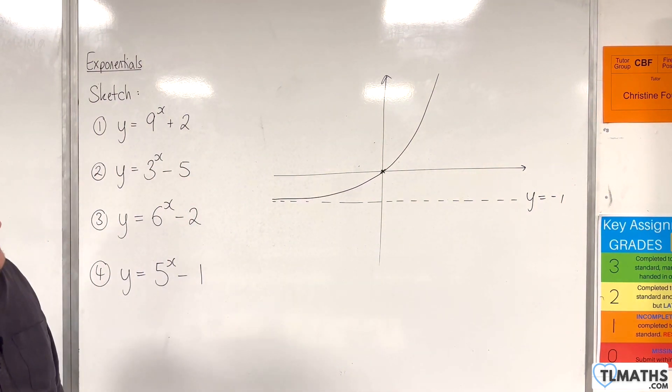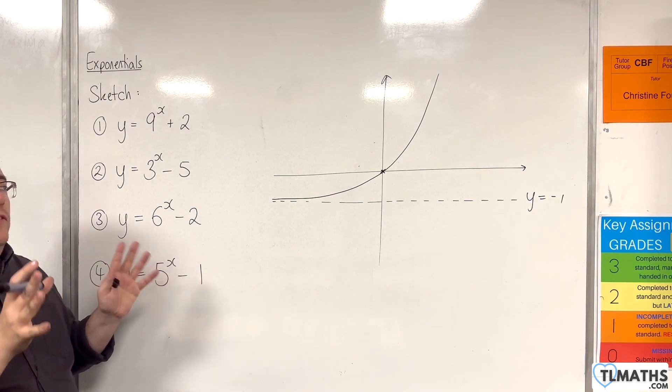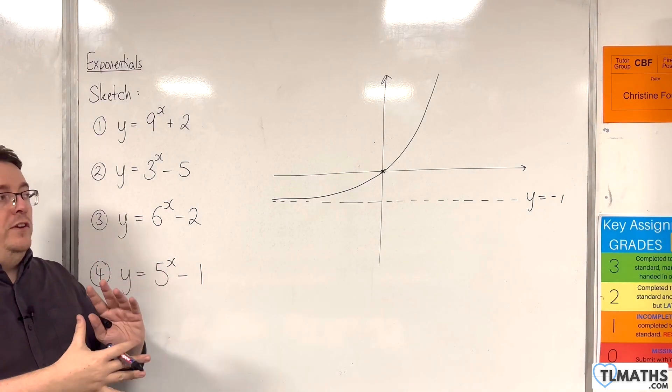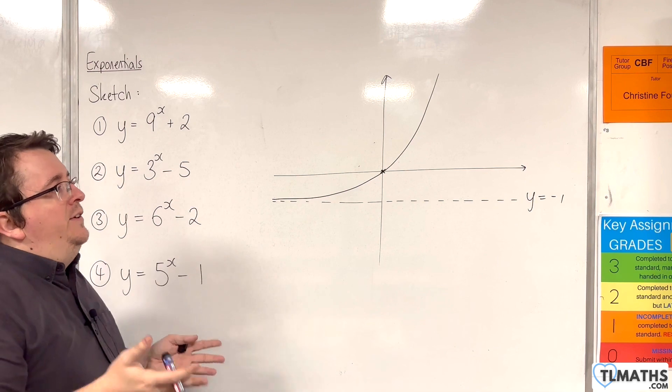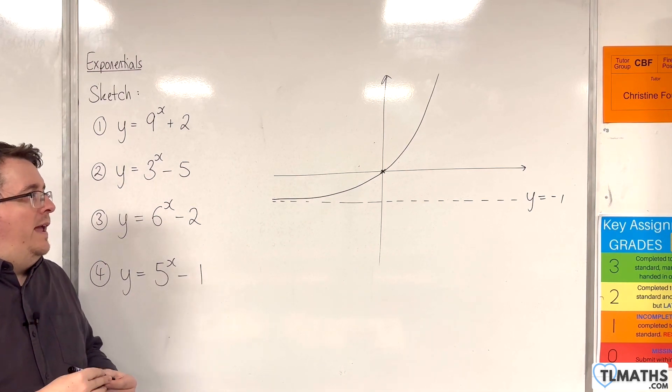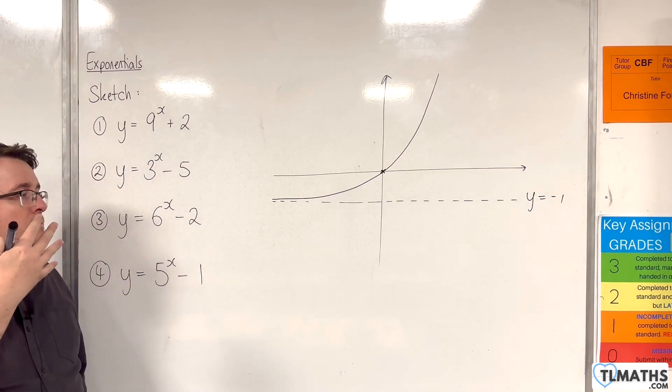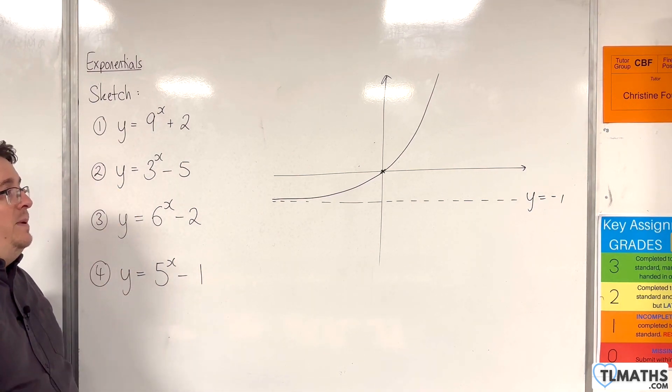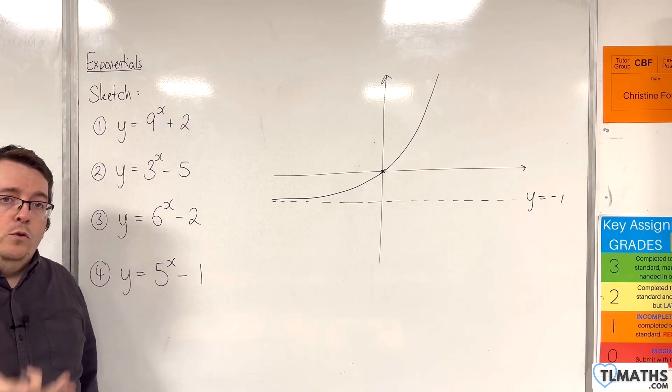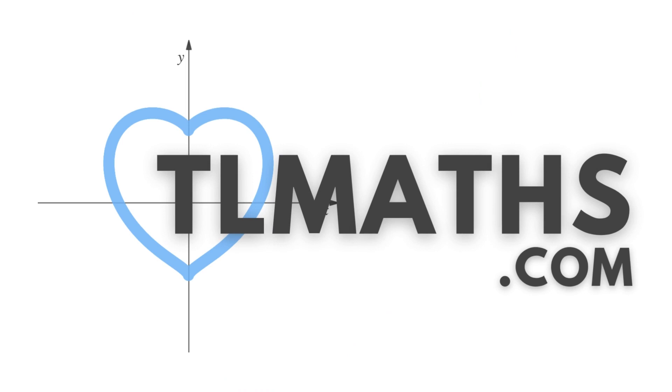So in this case we don't have to worry about working out where it crosses the x-axis separately and using logarithms, because it just crosses the x-axis at x equals 0. And so here have been some examples of being able to sketch exponential curves that have been lifted vertically or brought down vertically.